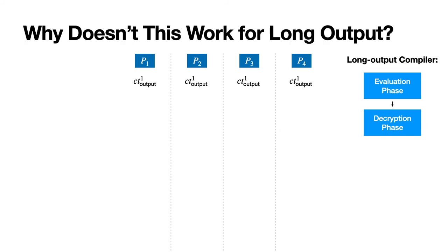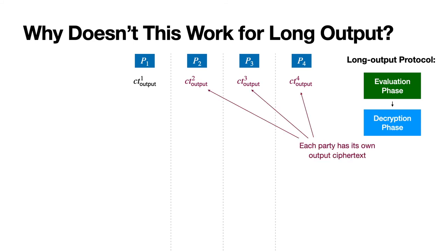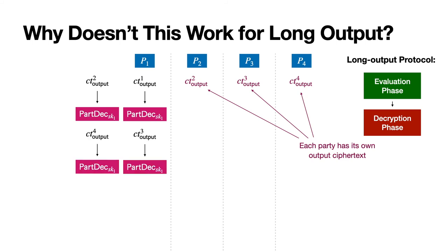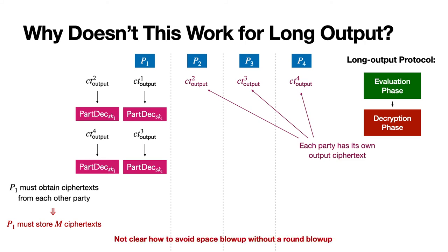Let's see what happens when we try to use our current compiler with long output. The evaluation phase still works without any modifications, but now instead of there just being one output ciphertext for party one, every party has its own output ciphertext, and this is going to cause problems in the decryption phase. Party one will have to run partial decryptions for all the other output ciphertexts from all the other parties, meaning party one has to obtain and store m ciphertexts. Essentially, what we need to do is run m instances of the decryption phase, and it's not clear how to avoid an unacceptable blowup in space complexity or round complexity. So we need a new approach for the decryption phase of the long output protocol.